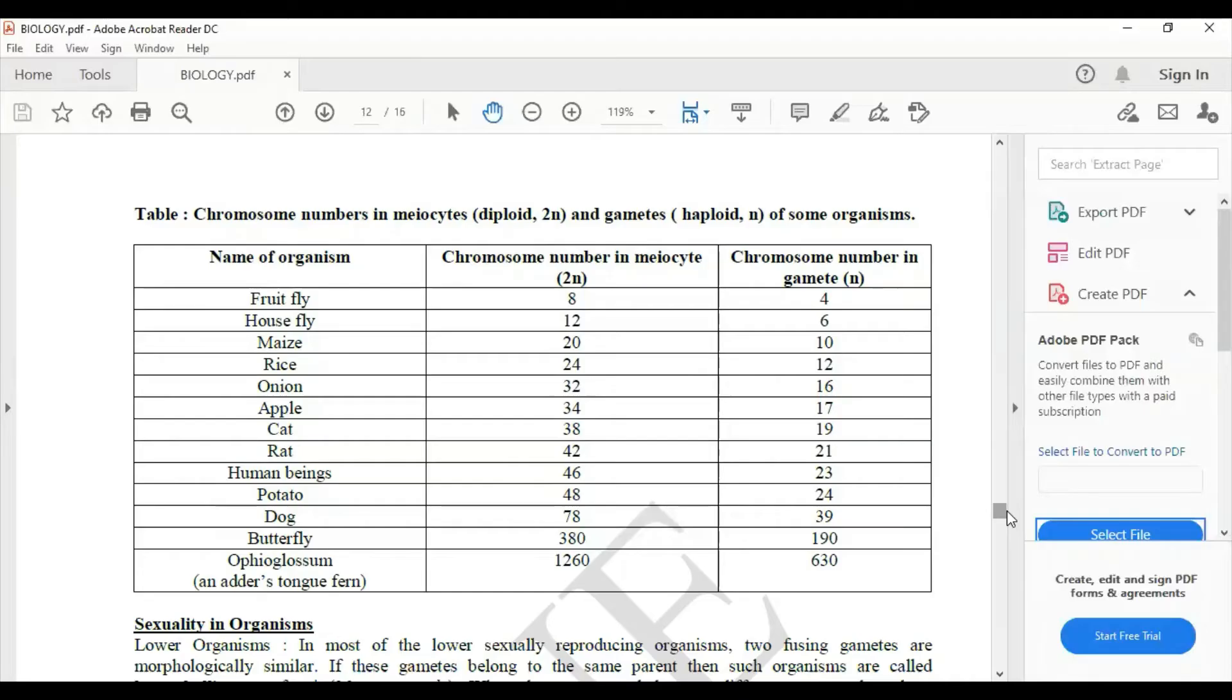And then this is a chart or a table which gives the complete explanation about name of the organism, that is the individual organism, and their number of chromosomes in meiocyte - that means the complete set or two sets of chromosomes or a pair of chromosomes. But in the next or the last column, you see the chromosome number in gamete, that means a single set.